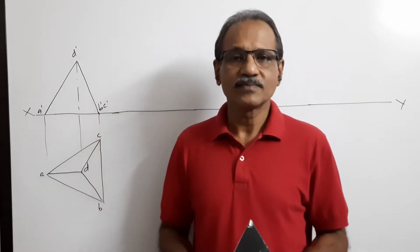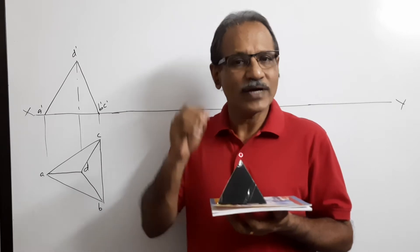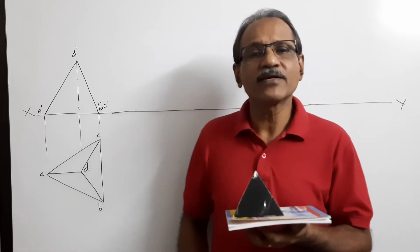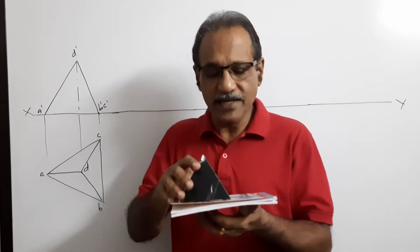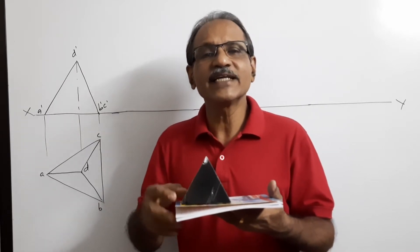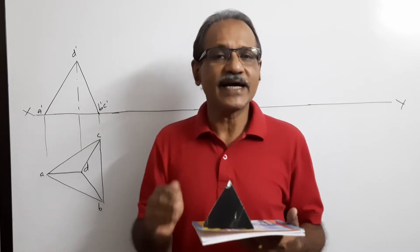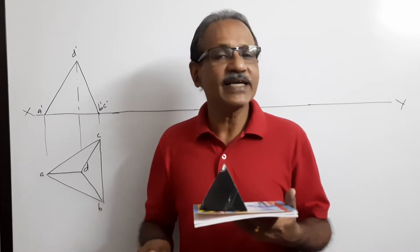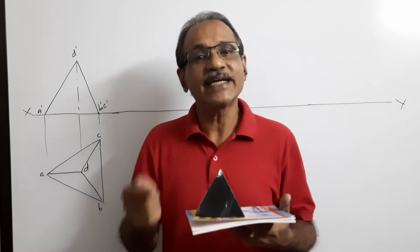A tetrahedron of 50mm side is standing on HP on a side which is inclined at 45 degrees to VP. The triangular face containing this edge makes 30 degrees to HP. I repeat: a tetrahedron is resting on HP on a side which is inclined at 45 degrees to VP, and the triangular face containing this edge makes 30 degrees to HP.